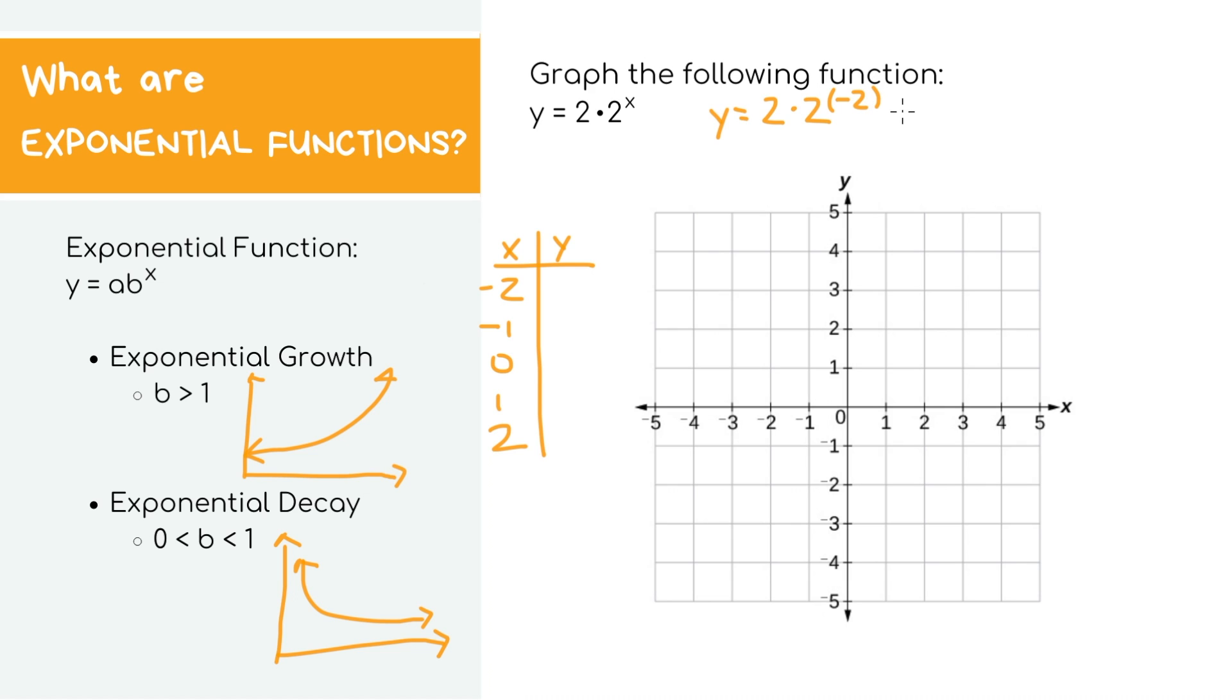And remember what we learned earlier about negative exponents. So to get rid of the negative exponent, let's take the inverse. So it's 1 over 2. And let's just carry over the power, which is 2. 2 times 1 over 4 is 1 half, which is our y value.